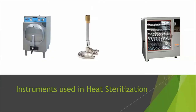The autoclave, shown on the left, works on pressure and steam and is used to sterilize culture media and instruments. The Bunsen burner is used for flaming and helps create a sterile environment — when transferring media, we work as close to the flame as possible. The hot air oven is used for metals and certain surgical equipment as well.